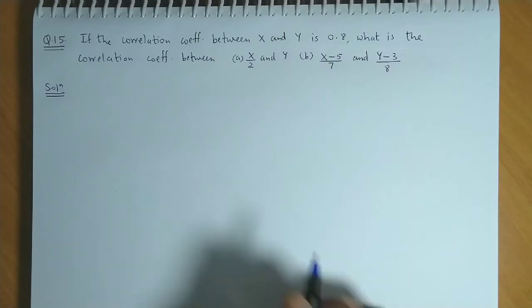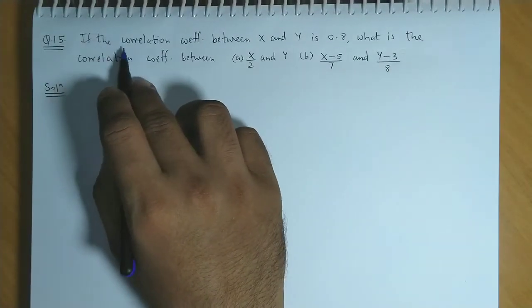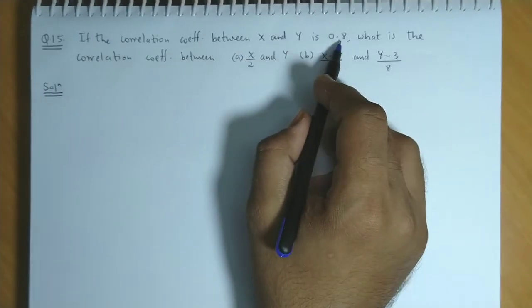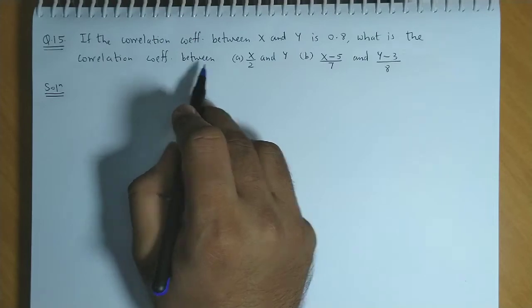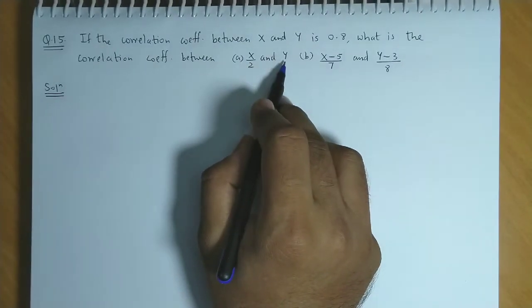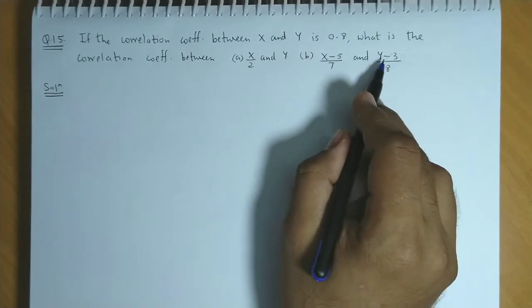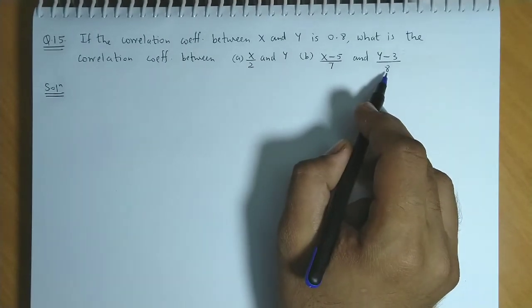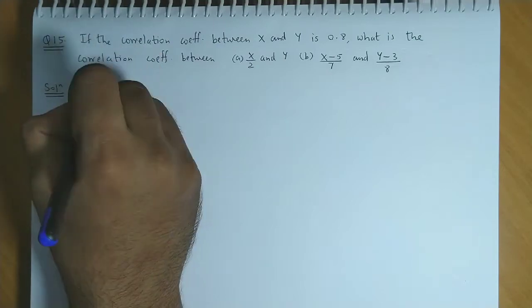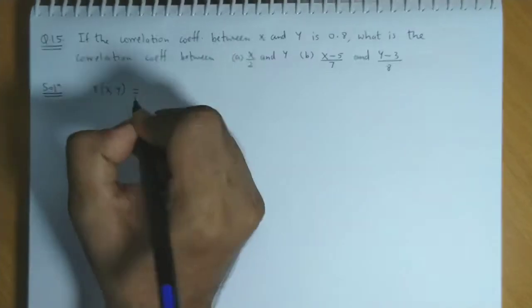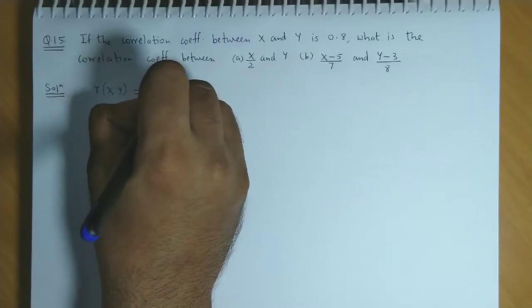Now, next question. Here it's given: if the correlation coefficient between x and y is 0.8, what is the correlation coefficient between x by 2 and y, and x minus 5 by 7 and y minus 3 by 8? The correlation between x and y is given as 0.8.